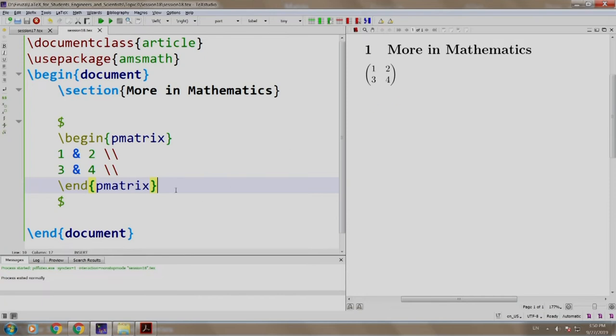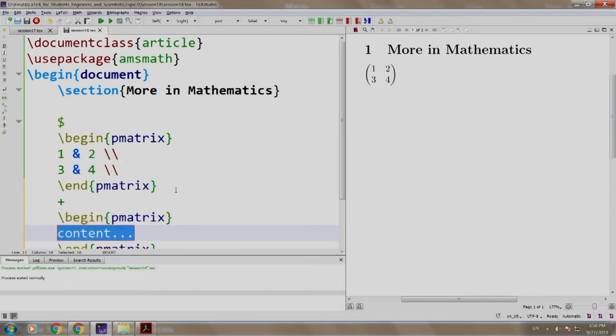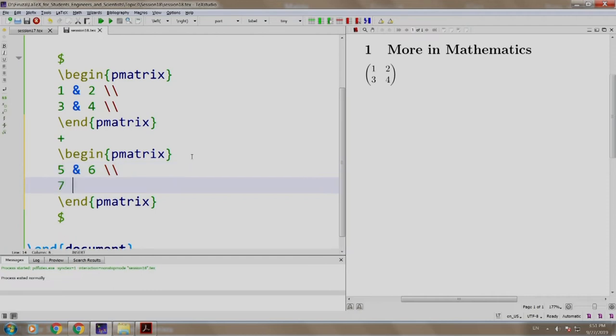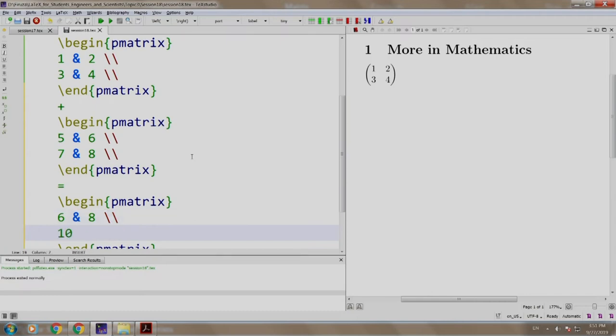Now let us do some addition of it. So we write plus, we have another begin matrix and we write 5 and 6 slash slash and 7 and 8 and after that we say equal to. So we write slash begin P matrix 6